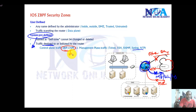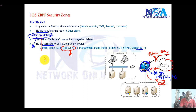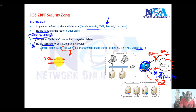We configure policies based on system predefined zones, typically called the self zone. When writing policies, a user-defined zone name refers to traffic moving through the router, whereas the self zone refers to traffic which is initiated by or destined to the router itself.